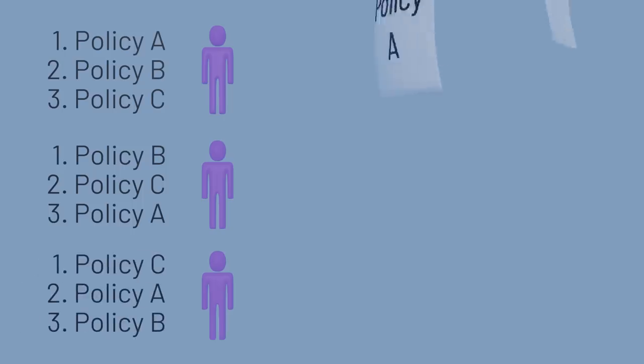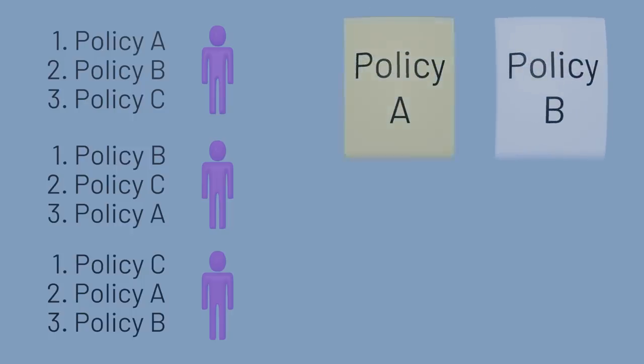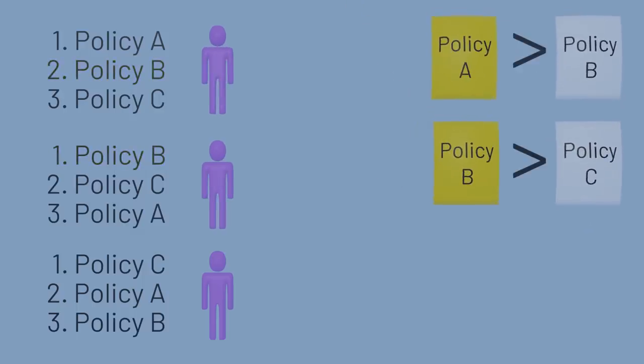If there were a vote between policies A and B, policy A would win, since two of the three voters prefer policy A. If there were a vote between policies B and C, policy B would win. So A is preferred over B, and B is preferred over C.